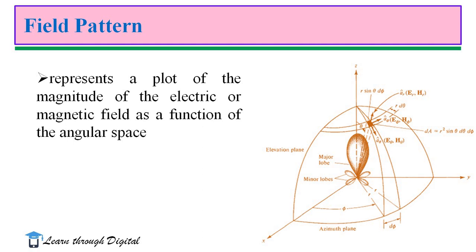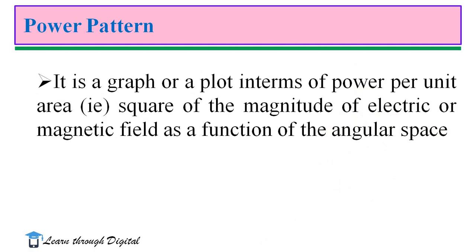As we know, there are two fields: electric and magnetic fields. There are three components in three different directions: Er, E-theta, E-phi. Similarly, for the magnetic field: Hr, H-theta, H-phi. The plot of the magnitude of E or H as a function of theta and phi is called a field pattern. Power pattern is a graph or plot in terms of power per unit area — that is, the square of the magnitude of the electric or magnetic field — as a function of angular space, namely theta and phi.